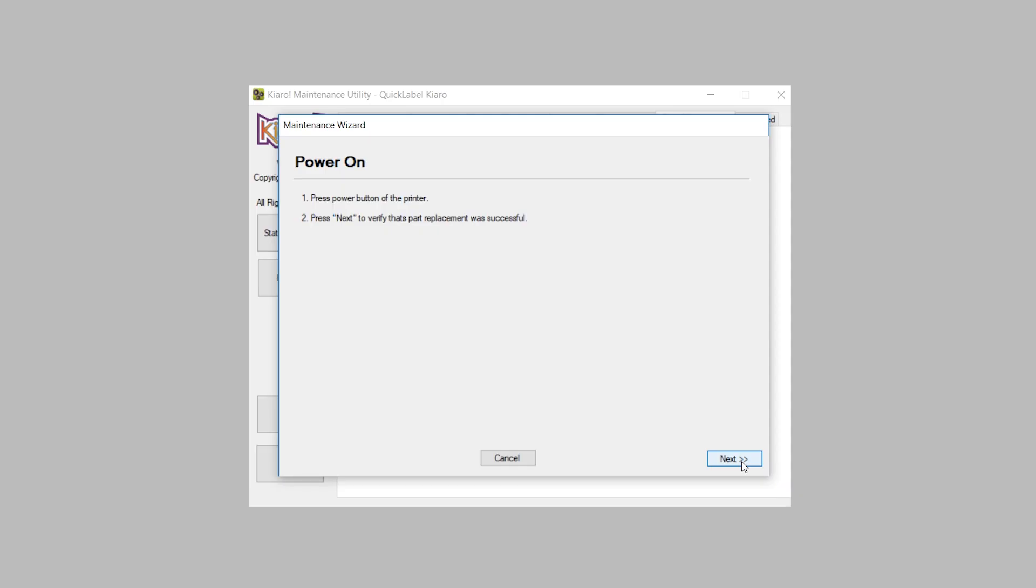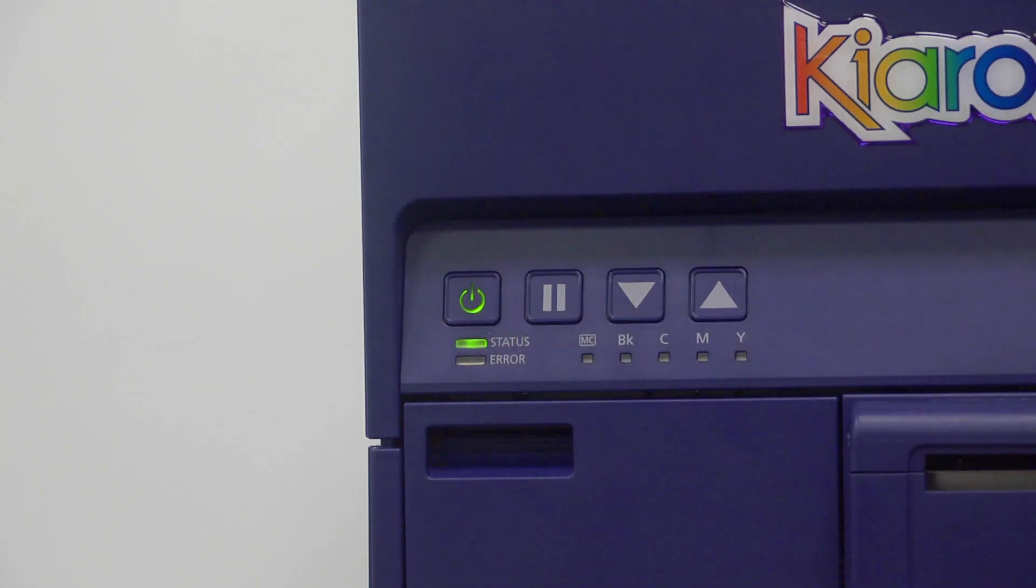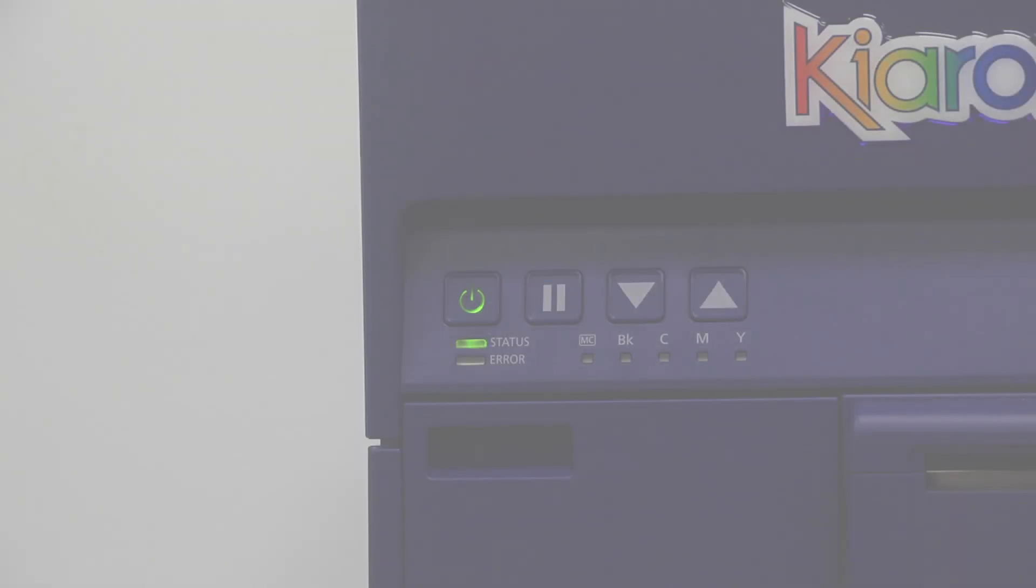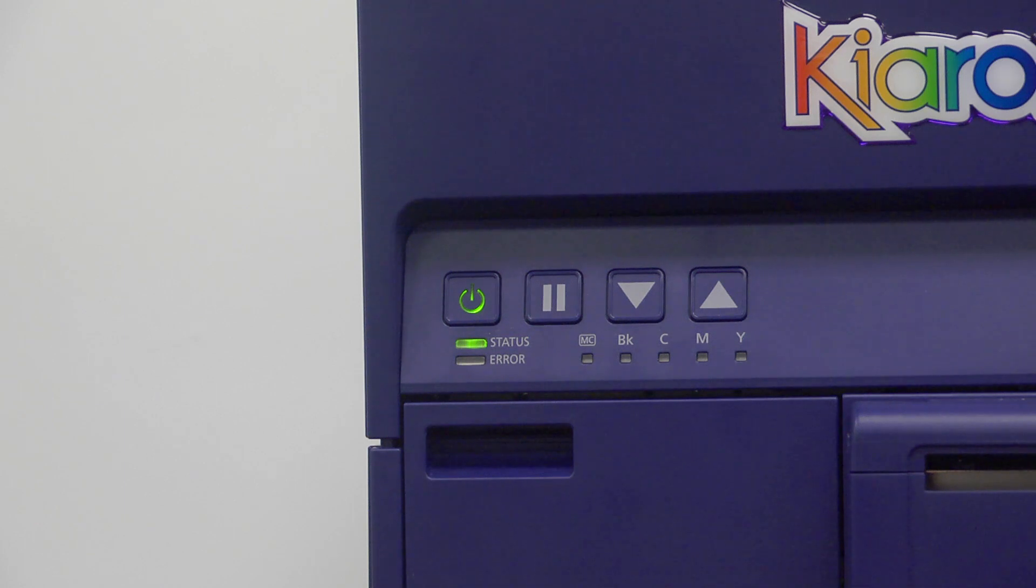Now you can power on the printer and select next on your computer. The printer will now prime, filling the ink lines with ink. This will take several minutes. Once completed, the LED light will display solid green.